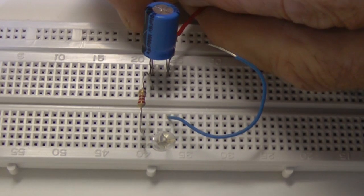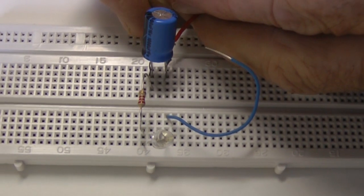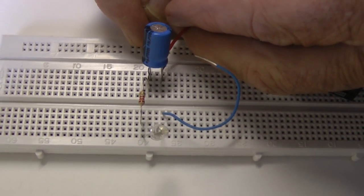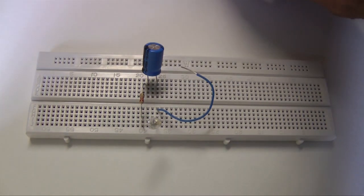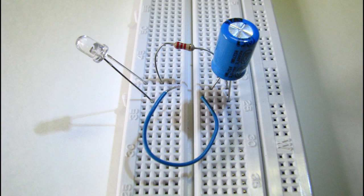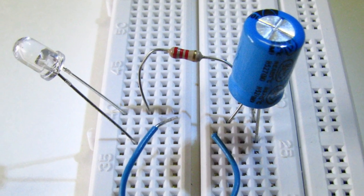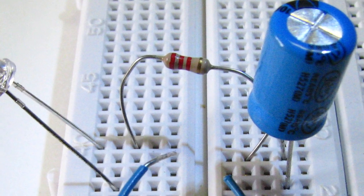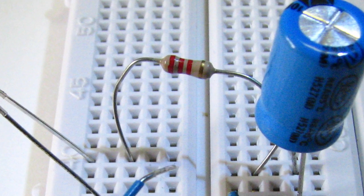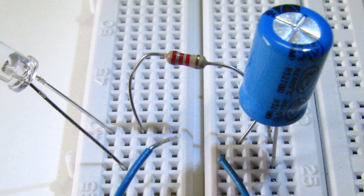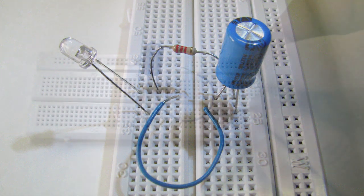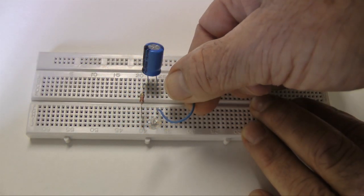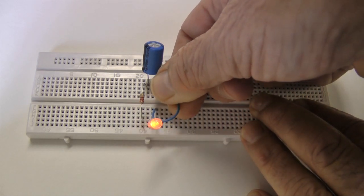I'm taking care to ensure the leads from the capacitor don't touch. This would create a short circuit. With the capacitor charged, I can remove the battery and connect the capacitor to a load. I'm using a 2200 ohm resistor and an LED. The current limiting resistor is essential. The low internal resistance of the capacitor and the 9-volt charge will damage an LED. The charge in this capacitor lights the LED for a few seconds.